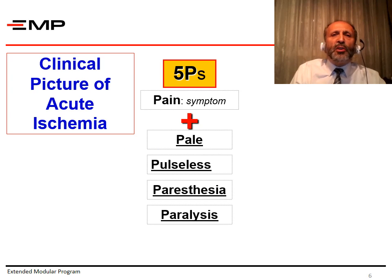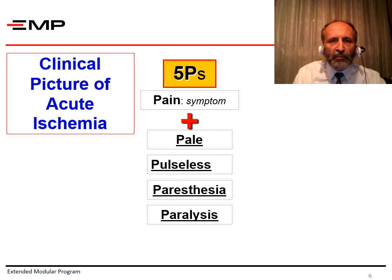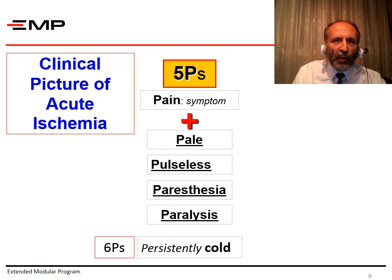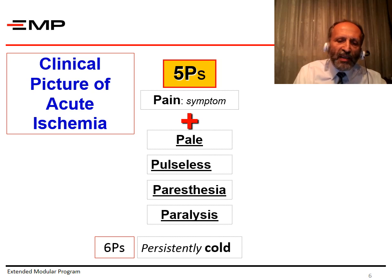The clinical picture of acute ischemia can be summarized in five Ps: pain, pulse absence, paresthesia, and paralysis. We can add another P for a persistently cold limb. More details about the clinical assessment of patients with acute limb ischemia will be discussed in the face-to-face session.